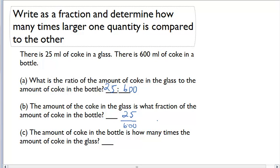Now, for the last part, it says the amount of coke in the bottle is how many times the amount of coke in the glass? Well, if the glass is only 25 and the bottle is 600, I can divide 600 over 25, which is going to give me 24.